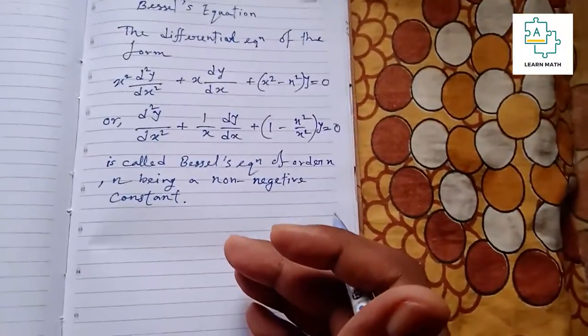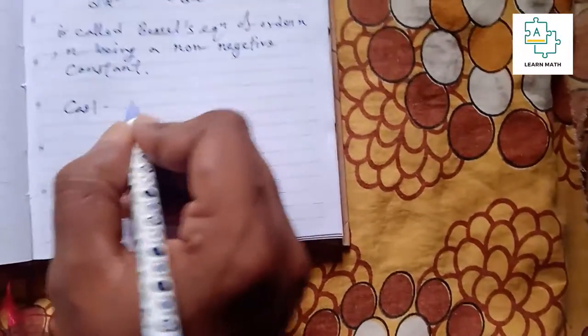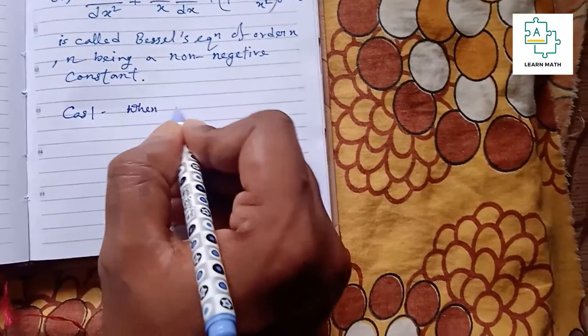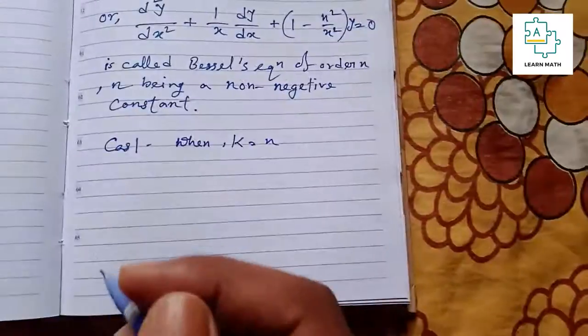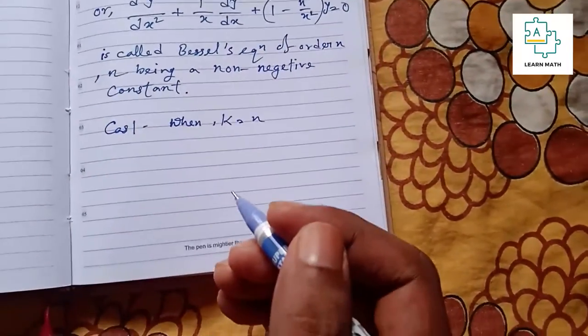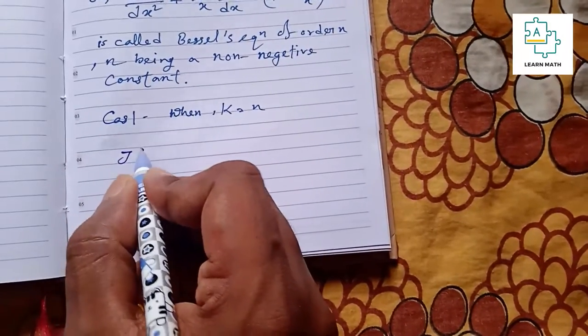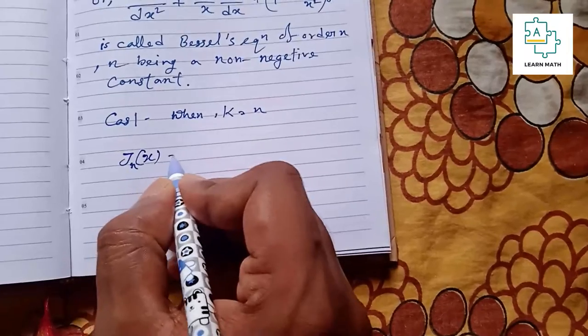This equation has two cases. Case 1 is when k equals n.